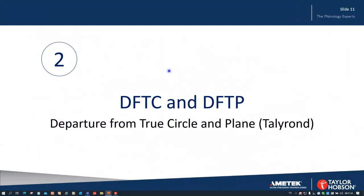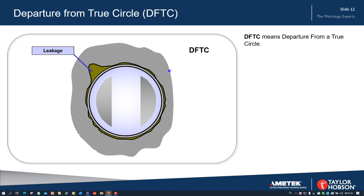Let's have a look now at departure from true circle and departure from true plane on a roundness instrument — in this case Taylor Hobson's Talyrond systems. DFTC means departure from a true circle; over the full 360 degrees it's the same thing as roundness — this is, if you like, local roundness. We might have a situation with a fuel pipe where if there is an error at one point, that's where leakage may occur. So we might have a specification over the whole circle which passes, but also a separate specification for a particular area relevant to leakage.